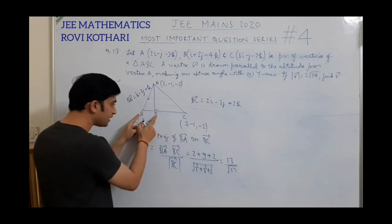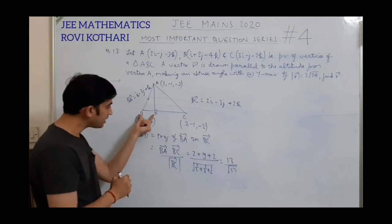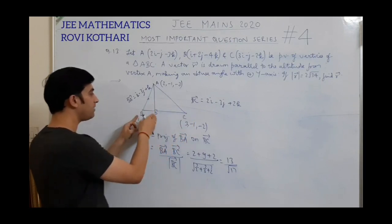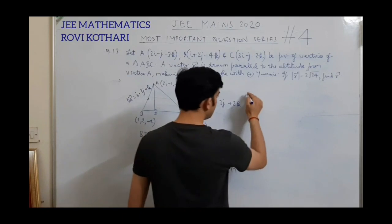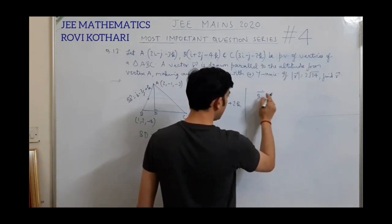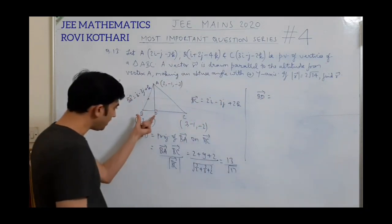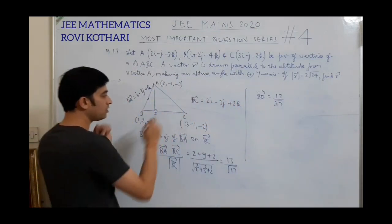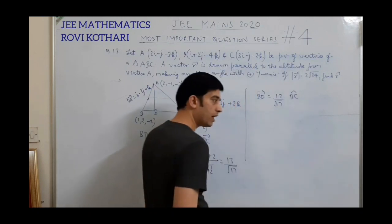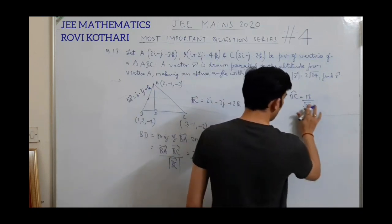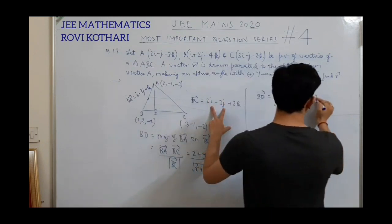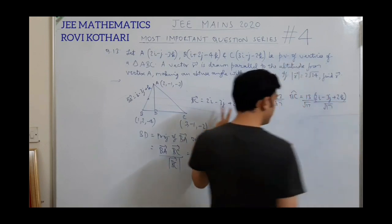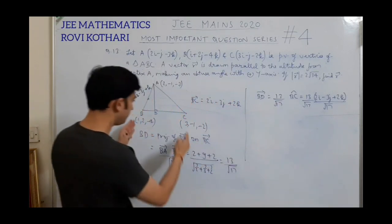I don't need this magnitude — I need the direction. BD has magnitude 13/√17 and its direction is along BC. So vector BD is (13/√17) multiplied by the unit vector along BC, which is (2i − 3j + 2k)/√17. Therefore vector BD equals (13/17)(2i − 3j + 2k).